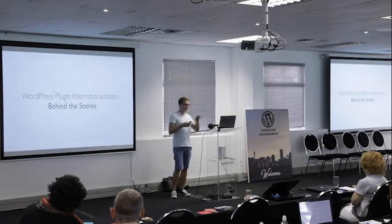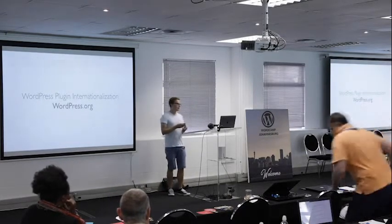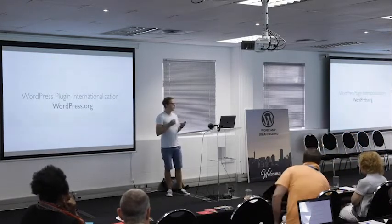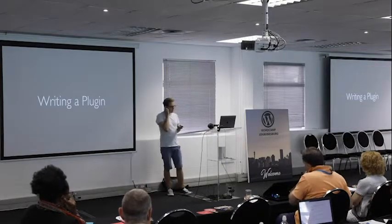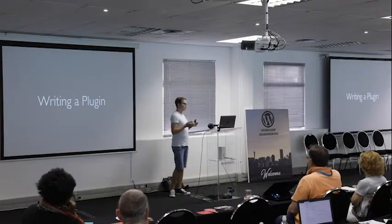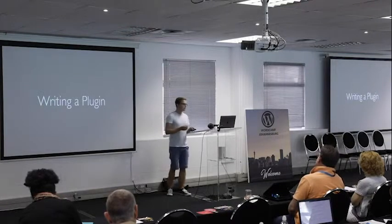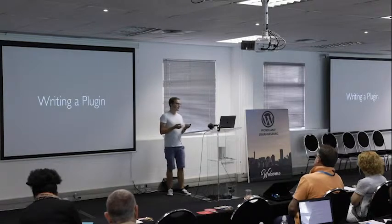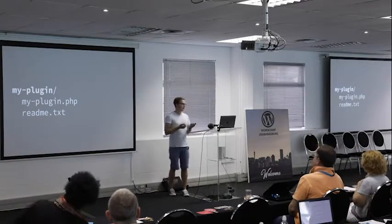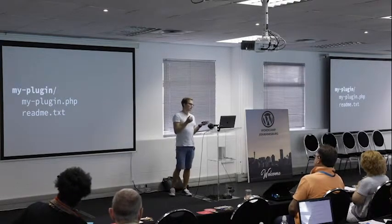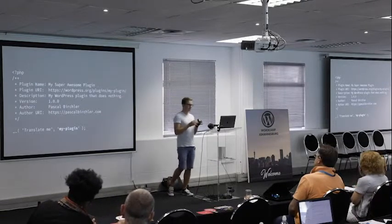Now let's look at how all these things from the translation platform come together for the benefit of WordPress plugin developers. We start by building a new plugin, and for this example, assume we want to publish it on WordPress.org, just like Jetpack, Yoast SEO, and thousands of others. The most basic WordPress plugin consists of a single PHP file, and in this PHP file we can use all the internationalization functionality WordPress provides to make our plugin translatable. If we want to distribute a plugin on WordPress.org, we also have to add a readme file. So the plugin's folder structure looks like this: a folder called my-plugin, containing the main plugin file called my-plugin.php and a readme file.